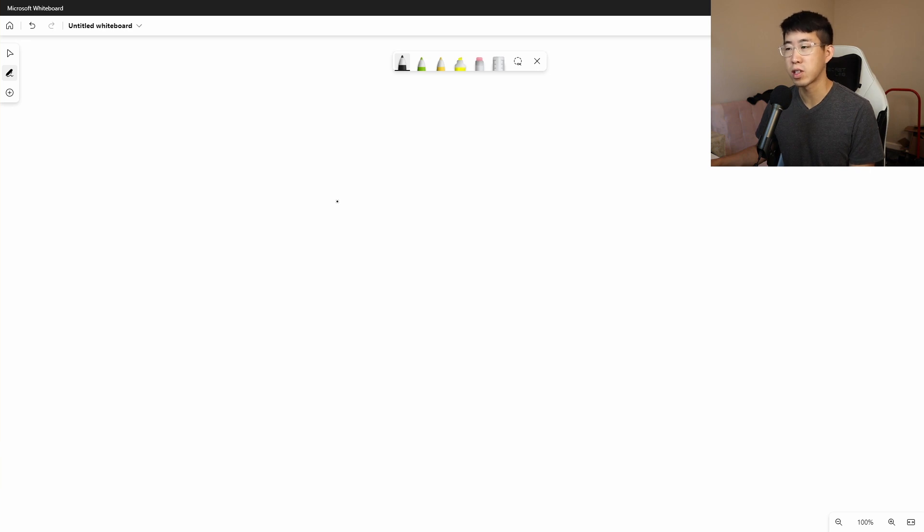This is going to be a quick explanation of the coagulation cascade. The first factor to remember is factor 10 or factor X, and this is going to be right in the middle. The way you're going to remember this is that X marks the spot.